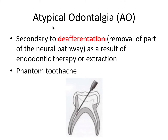Our next example of neuropathic pain is atypical odontalgia. We can unpack this name: atypical means not normal, odont refers to a tooth, and algia is pain. So we can unpack this as not typical tooth pain, and that's exactly what it is. It's secondary to deafferentation, which means removal of part of the neural pathway as a result of endodontic therapy or extraction. Deafferentation is the partial or total loss of afferent neural activity to a particular body region by removing part of that neural pathway. A pulpectomy would be an example, as with tooth extraction — we're literally removing the tooth and any nerve source that that tooth was supplying.